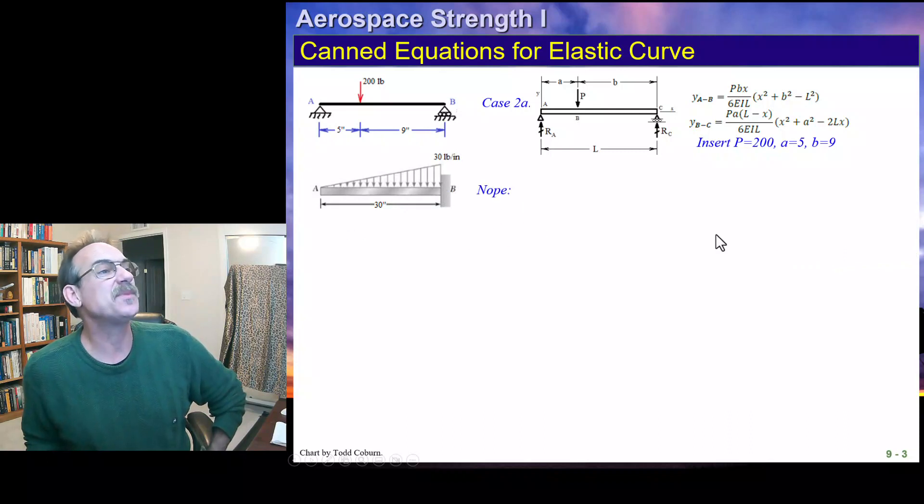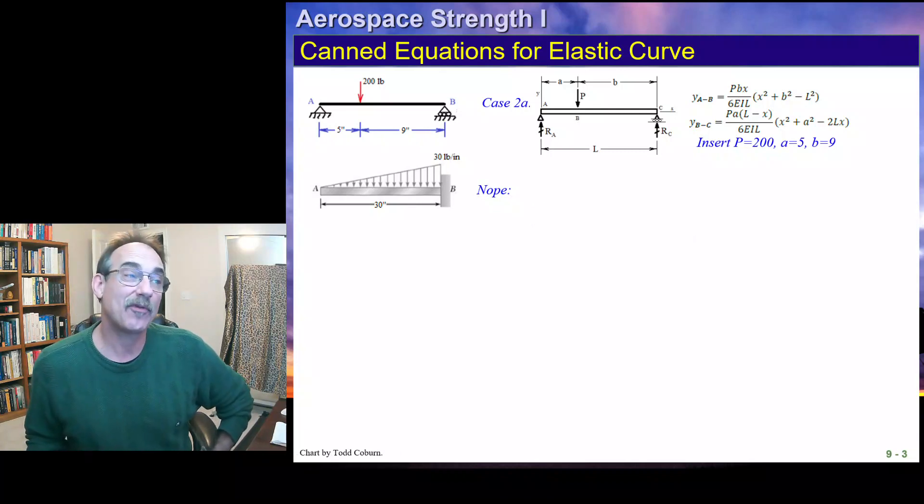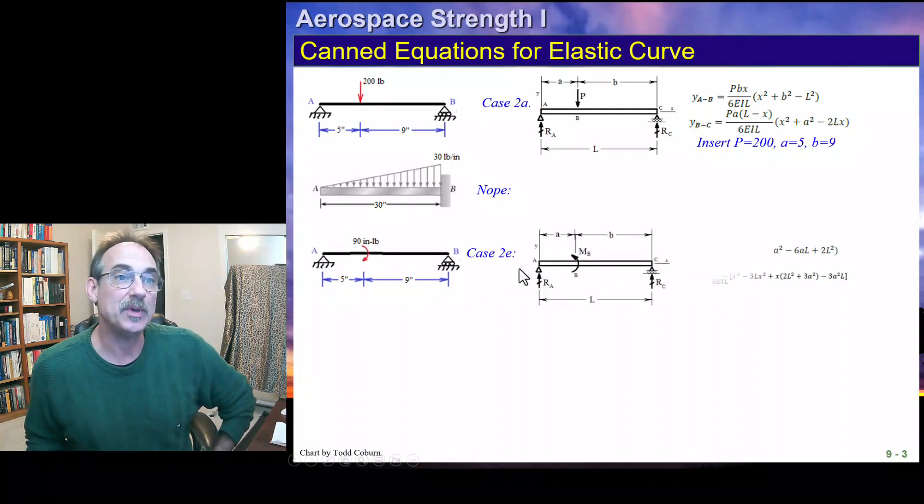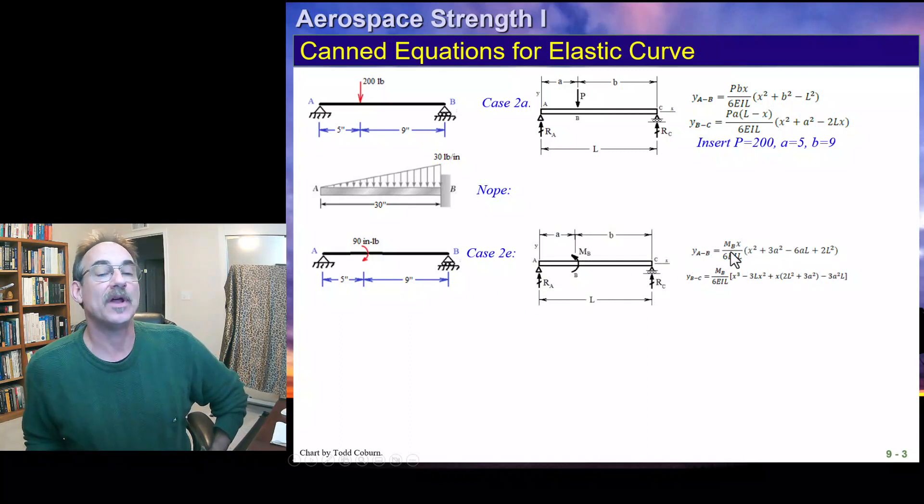If we have this particular case, we look at our beam, and we find that that is not in our handbook, at least not in the Aerospace Strength Handbook. Therefore, writing the singularity function is probably the easiest way. This one here, we can see that this exists. That's Case 2E. So we just plug in, we have two functions once again. We can just plug in values and use that.